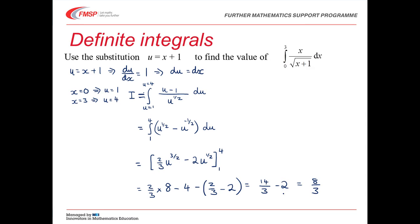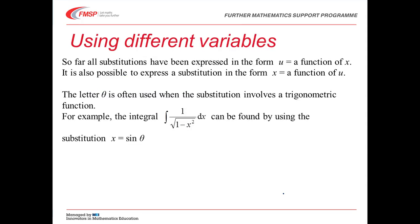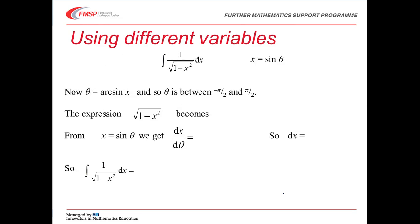So far all our substitutions have been in the form u equals a function of x. But sometimes it's easier to say x is a function of u — or often some other letter, sometimes t, and quite often if we're doing a trig substitution, theta. With the integral of 1 over root(1 minus x squared), it so happens that using x equals sine theta as the substitution makes it fall out very simply.